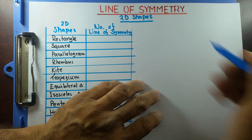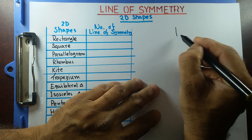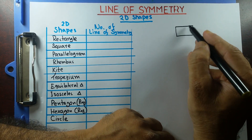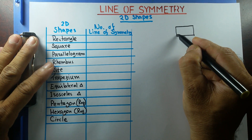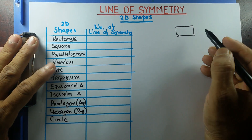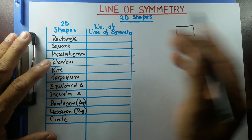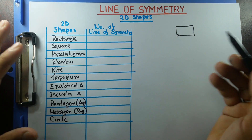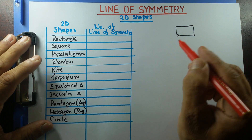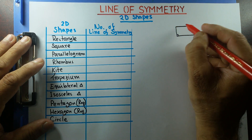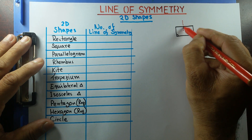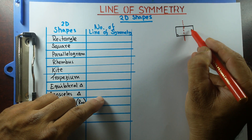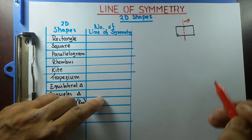First, what is line symmetry? Let's say I have this rectangle. Opposite sides are parallel and equal, and each of the angles is 90 degrees. If we can fold this shape through a line so that I have two congruent parts, then that line through which I'm going to fold it — if this part coincides with that part — we call that a line of symmetry.